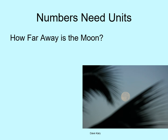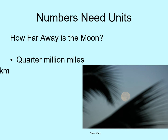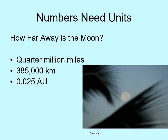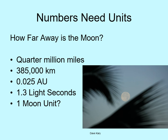Let's start with a basic question: how far away is the moon? Take a moment and think about it. Here are some of the possible answers. You could say it's a quarter of a million miles, or maybe 385,000 kilometers, or 0.025 astronomical units, or 1.3 light seconds, or one moon unit — okay, I made up that last one. The point is that the numbers don't tell you enough. You can't just say 385,000 and have an answer. Every time you give a number, you've got to say what units you're talking about as well. Otherwise, the answer doesn't mean anything. The key here is that units count.